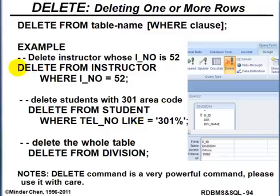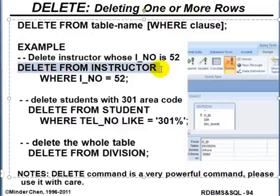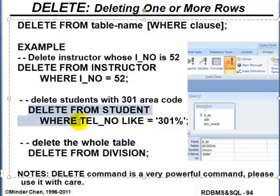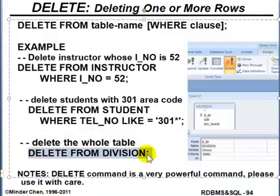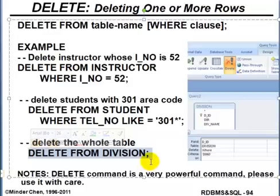For DELETE, the syntax is very similar to UPDATE. You say DELETE FROM the instructor table WHERE employee number is 52 — deleting that particular record. If you DELETE FROM the student table WHERE telephone number LIKE '301%' (in Access this uses asterisk), it deletes all students whose telephone number starts with area code 301. If you just say DELETE FROM division with no WHERE clause, you remove all existing records in the division table — it becomes an empty table, but the table itself is not removed.